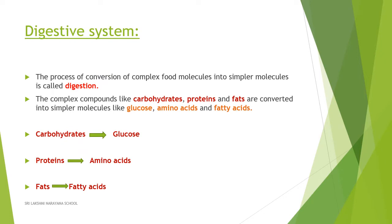Let's move on to our first system: the digestive system. In this system, complex food molecules are converted into simpler food molecules. The food we consume consists of nutrients like carbohydrates, proteins, and fats — these are called complex food molecules. They are converted into simpler food molecules like glucose, amino acids, and fatty acids.